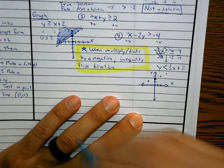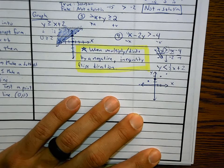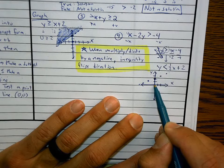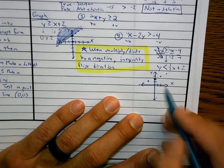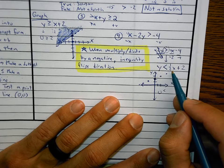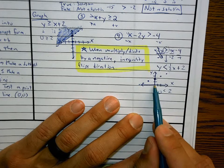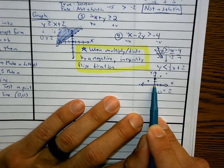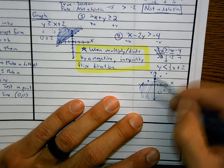If it's solid, it means the line is part of the solution. I have to decide whether to shade above or below. The easiest point to plug in is usually 0, 0. I plug in 0 for y — less than one half times 0 plus 2 — is 0 less than 2? Yes. So 0, 0 is a solution and is on the shaded side. All the solutions are on this side — there's our answer.